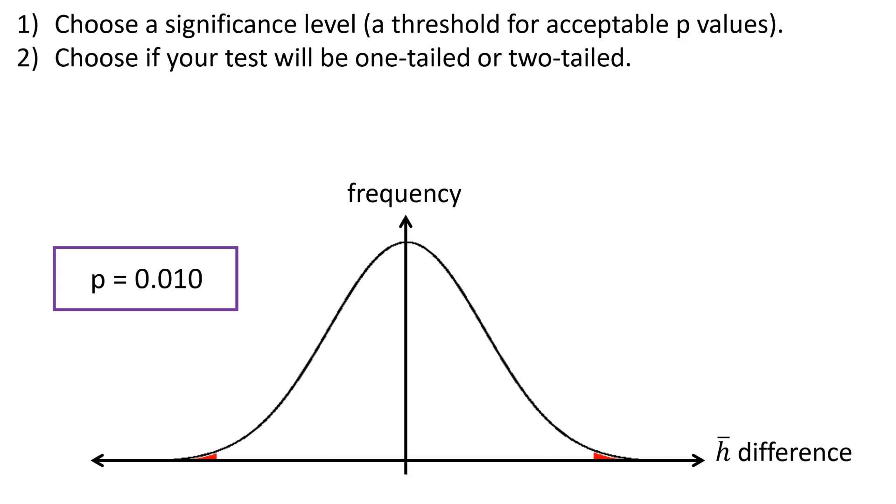The second thing you need to pick is whether your test will be one-tailed or two-tailed. So if you're not really sure whether men are taller or shorter, that would be a two-tailed test. That's a more conservative, safer bet.